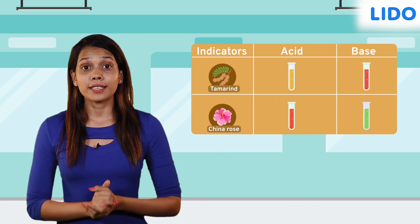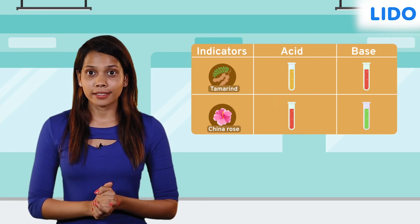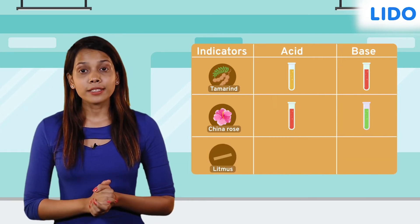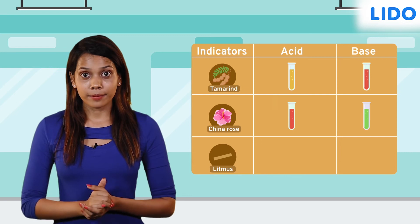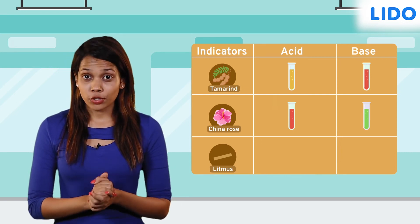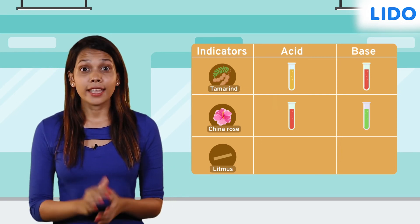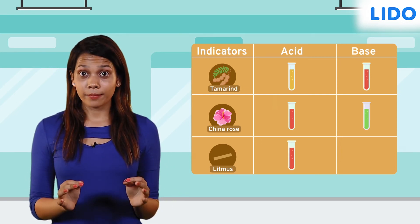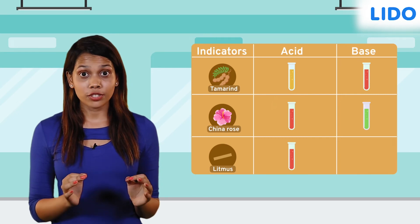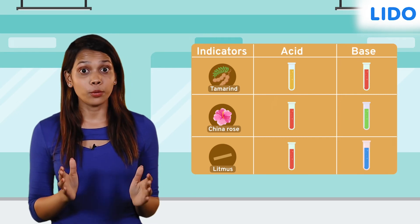The most commonly used natural indicator is litmus. It is extracted from lichens. When an acidic solution touches it, it turns red. And when a basic solution touches it, it turns blue.